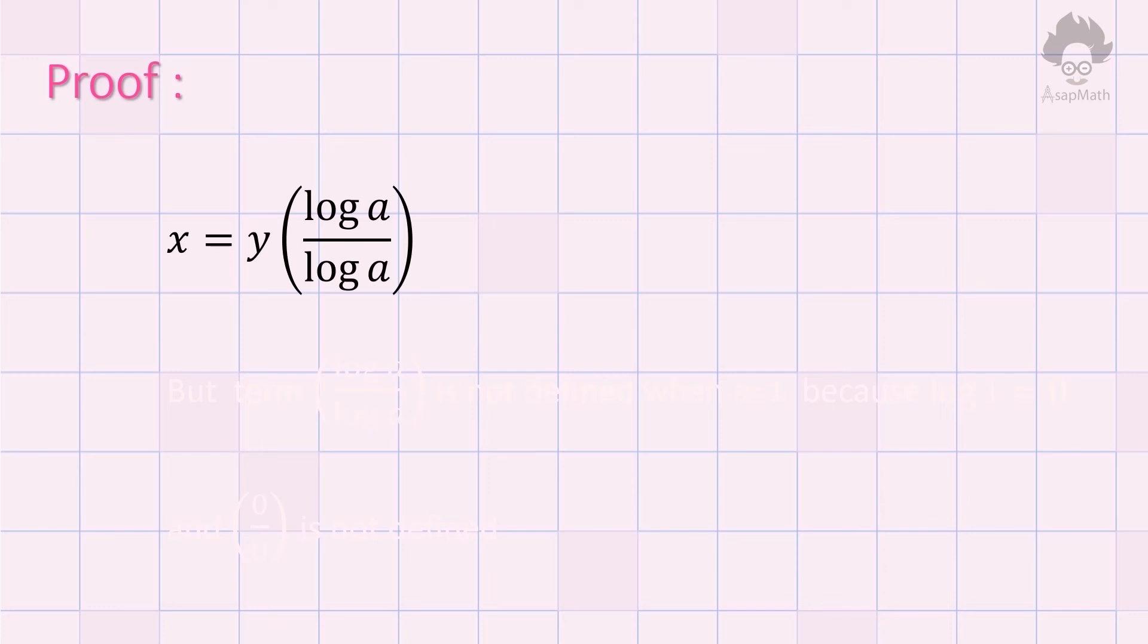When a equals 1, we have log 1 divided by log 1 on the right side. But we know that log 1 is equal to 0. So that part becomes 0 divided by 0.